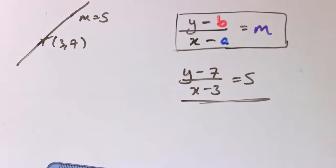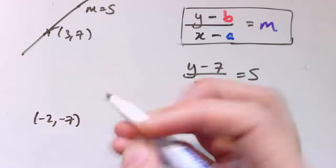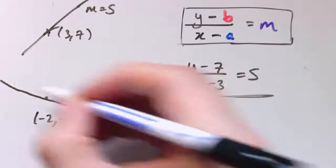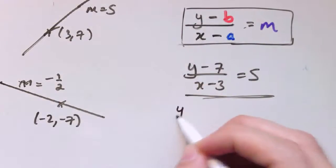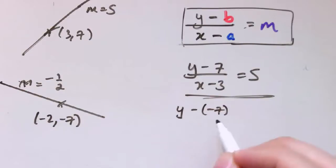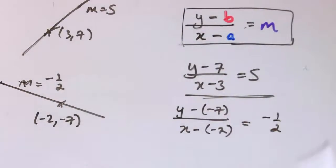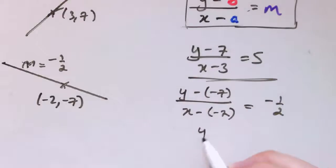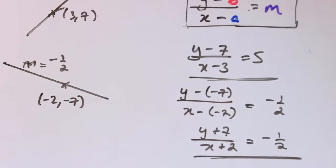Just be a little bit careful with negative values. If the line goes through (minus 2, minus 7) and the gradient is minus one-half, then substituting into y minus b divided by x minus a equals m gives (y minus minus 7) divided by (x minus minus 2) equals minus one-half, which simplifies to (y plus 7) divided by (x plus 2) equals minus one-half. You can rearrange that into one of the other forms if needed.